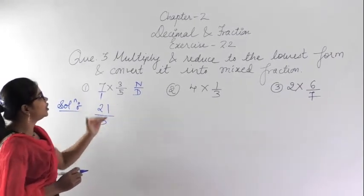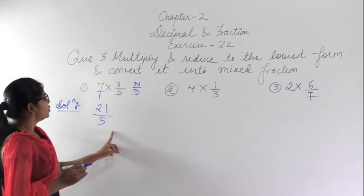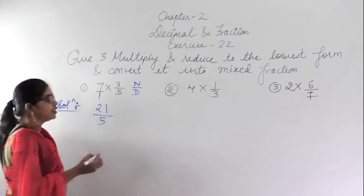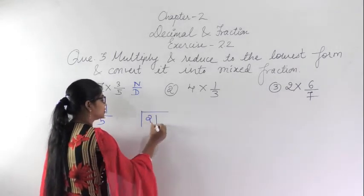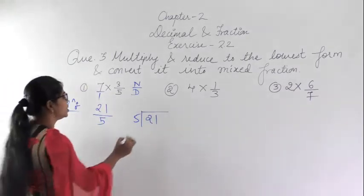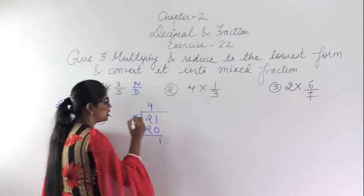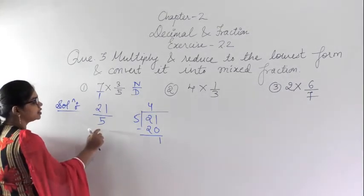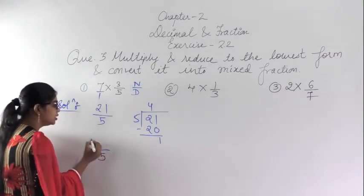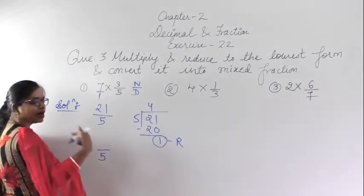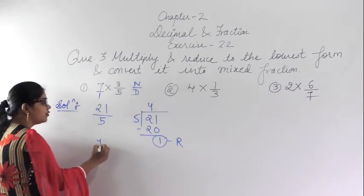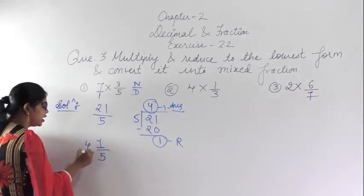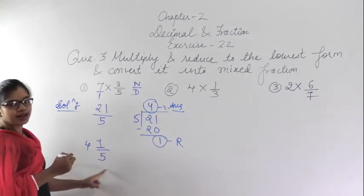So 21/5 is already in the lowest form. Now the third step is to convert it into a mixed fraction. Divide 21 by 5: 5 fours are 20, remainder is 1. Keep the denominator as 5, the remainder goes in the numerator, and the quotient on the side. So the answer is 4 and 1/5. You can verify: 5 fours are 20, plus 1 is 21 over 5.